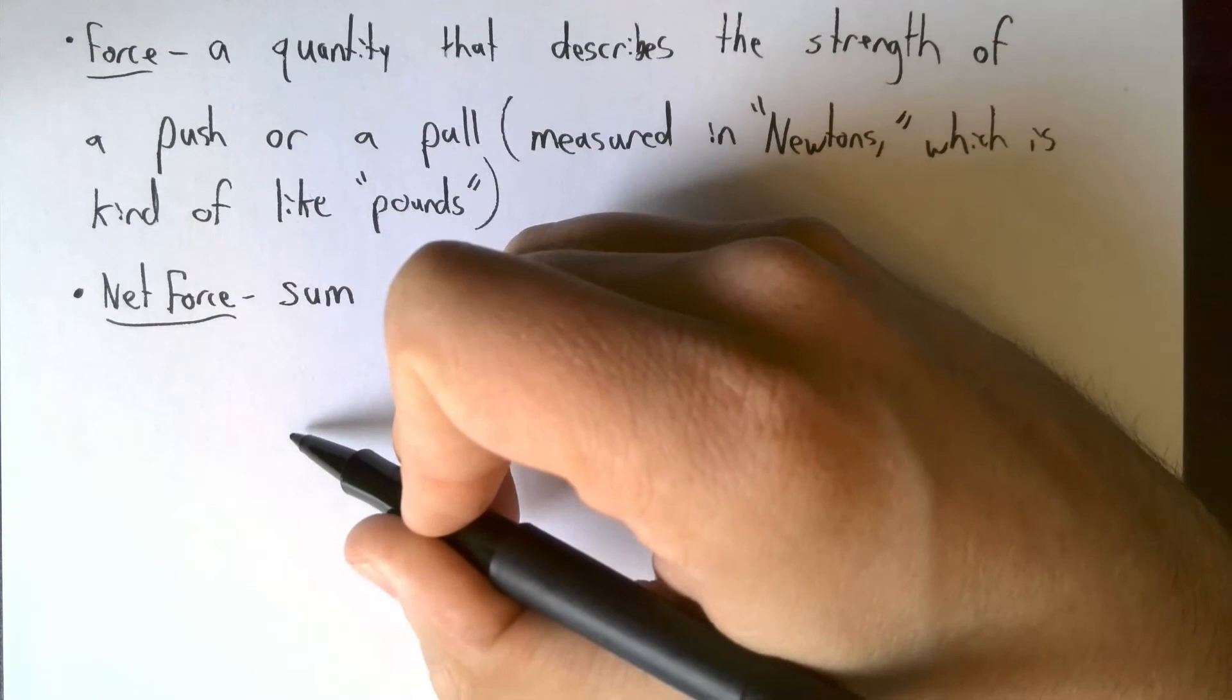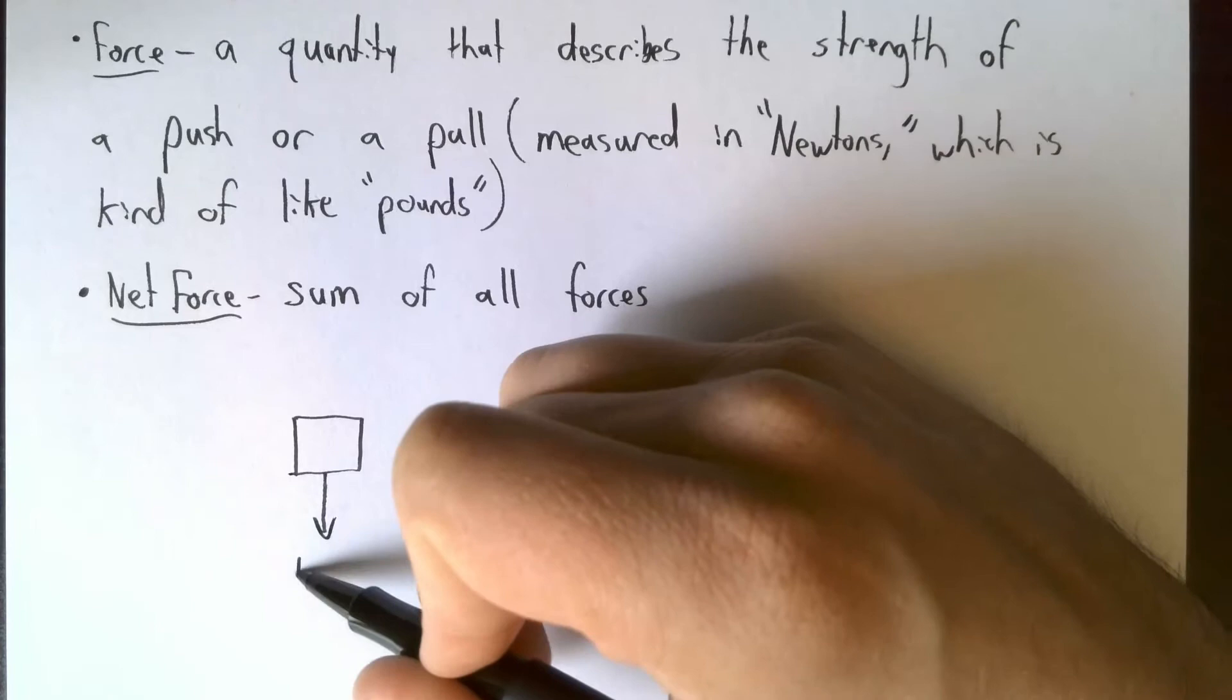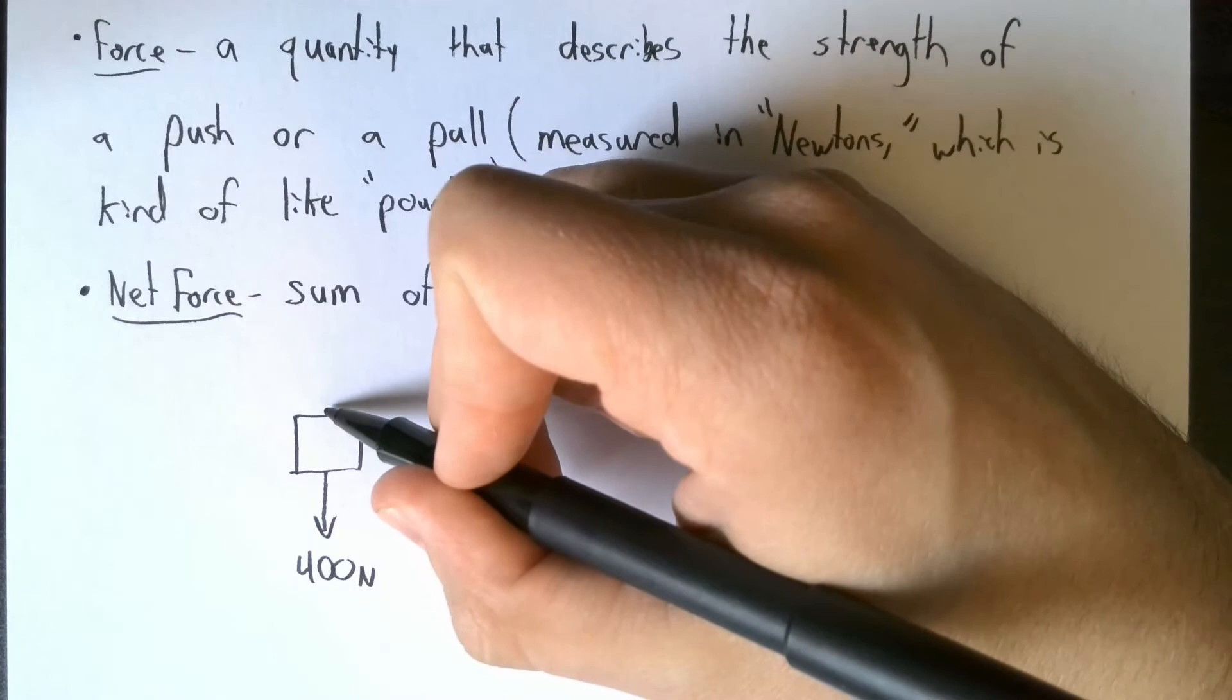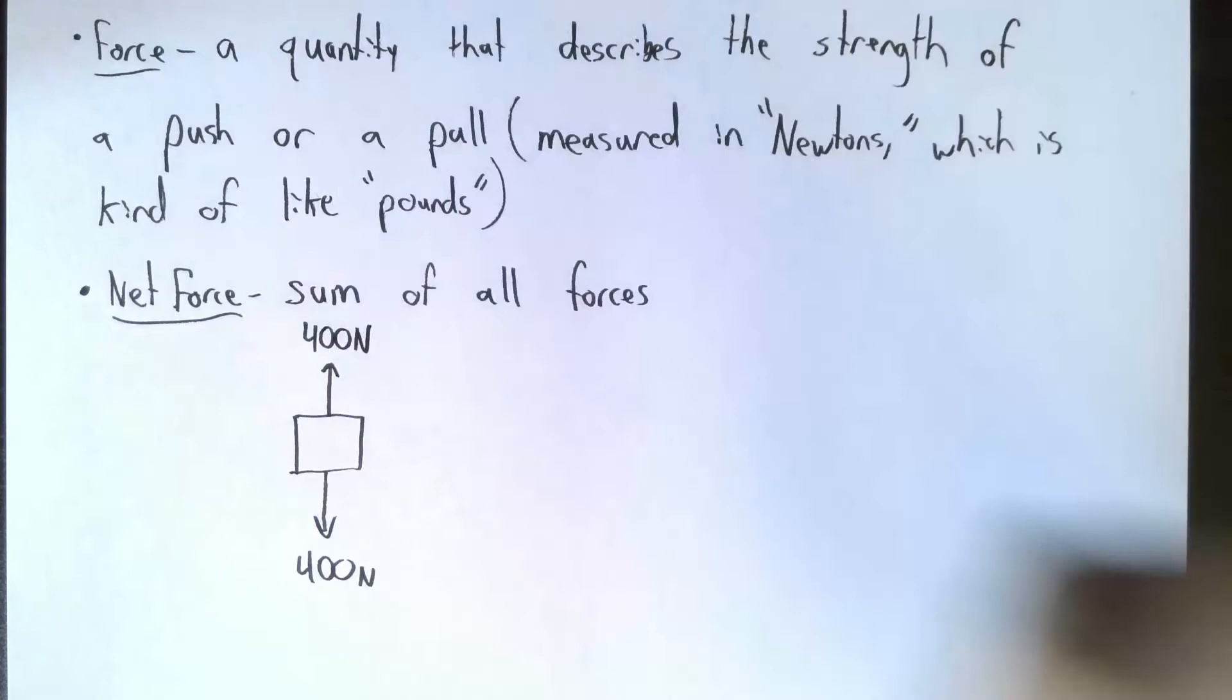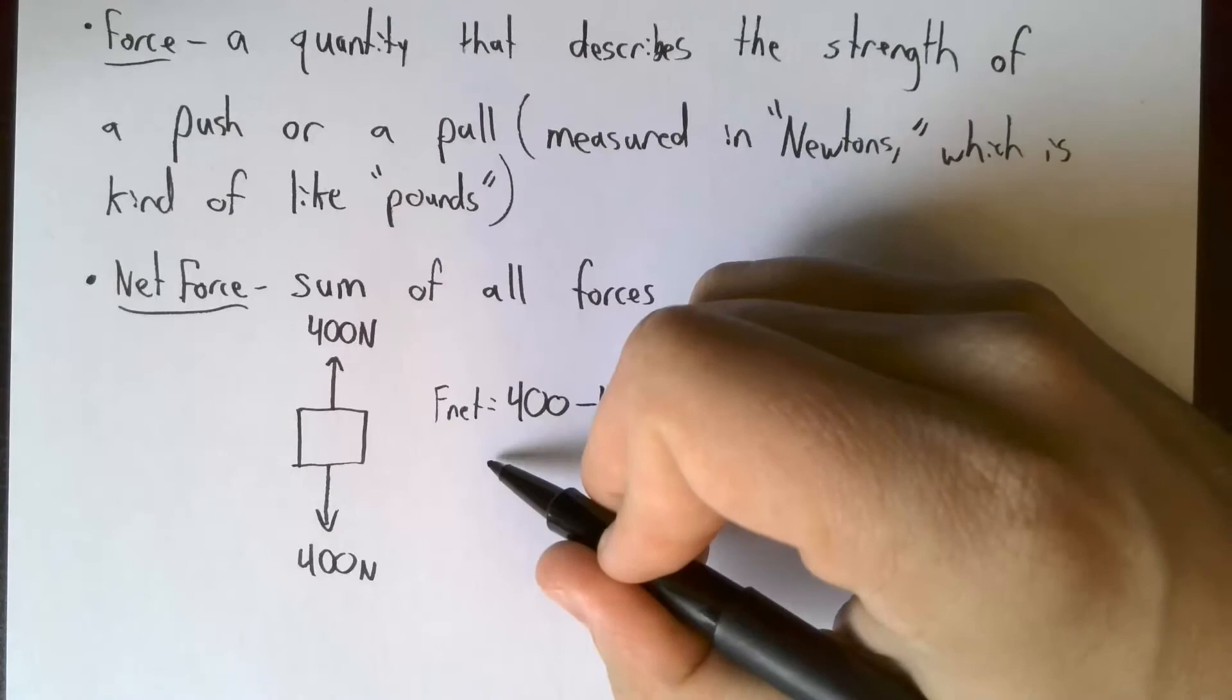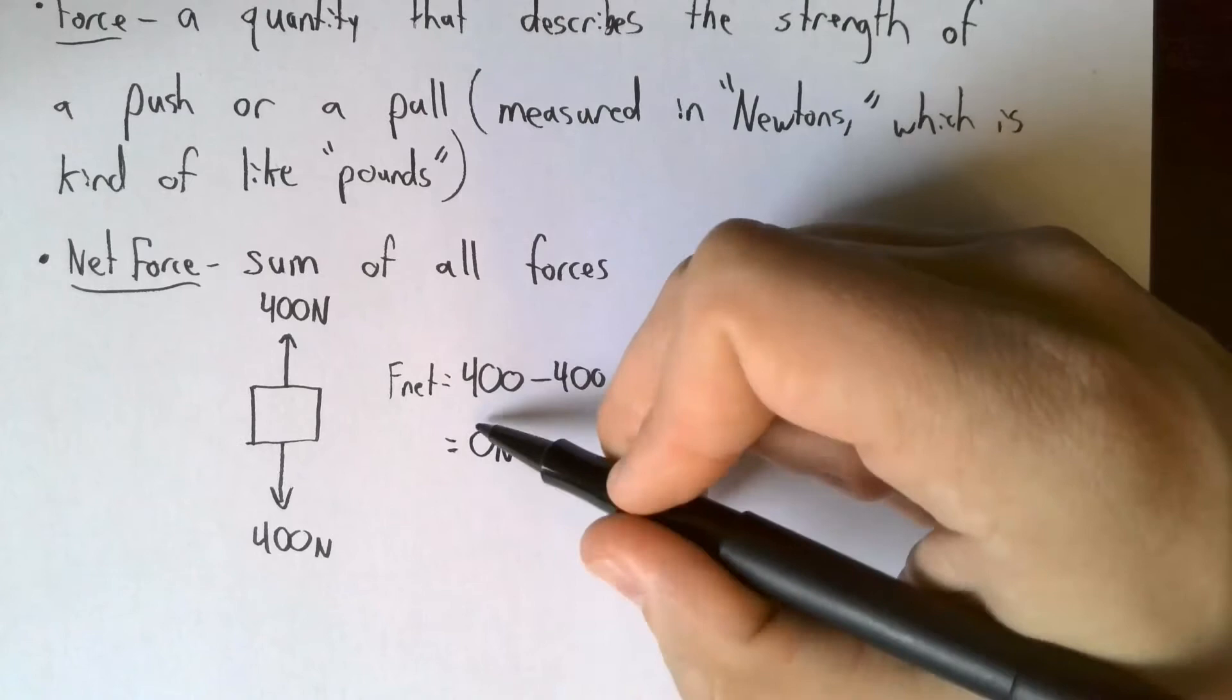For example, maybe the force of gravity is pulling down on somebody with 400 newtons. That's maybe, I don't know, 100 or so pounds. Gravity's pulling down on them with 400 newtons of force, and the ground pushes up on them with 400 newtons of force. The sum of those forces would be 400 minus 400, 400 plus negative 400. And the reason this one's negative is because it's pointing down. So the net force in this case is zero newtons. We have no net force.